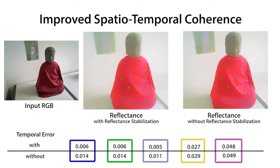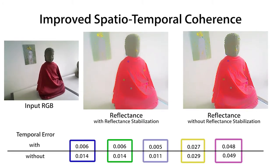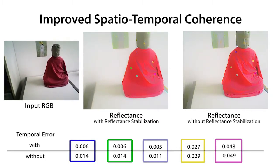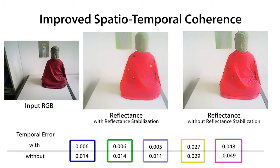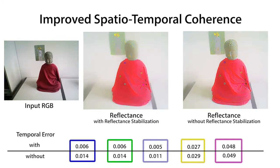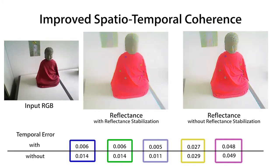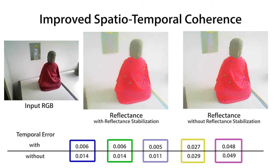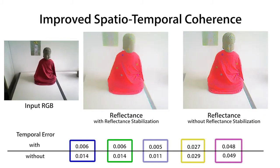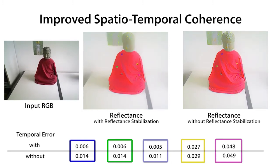The reflectance fused mesh is used to initialize and constrain the intrinsic decomposition. We evaluate the temporal coherence of the estimated reflectance with and without this constraint. Our novel energy term achieves a higher temporal coherence, as indicated by the lower error values for 5 pixel patches of the scene. Observe the reduced flickering and improved spatial coherence of our reflectance image.